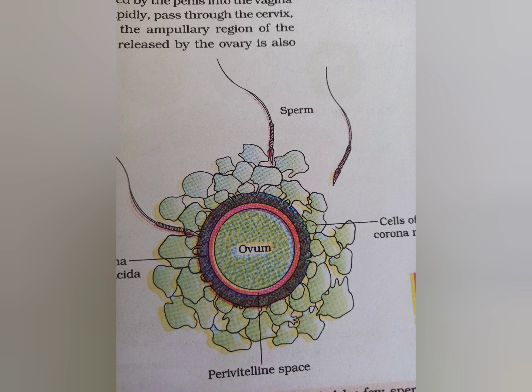It is not necessary that every ovulation will be followed by fertilization. If fertilization happens, then the zygote is implanted in the uterus. If fertilization does not happen, the unfertilized egg will be released. The process of fusion of sperm with ovum is called fertilization.